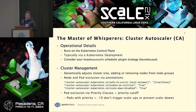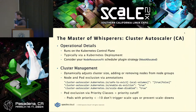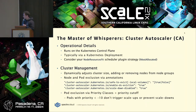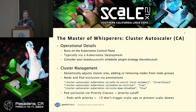At a high level, Cluster Autoscaler changes the sizes of the node groups that make up your cluster, whether adding or removing nodes. It's configurable through annotations. If you want to prevent a node from being taken offline completely, you can give it the scale-down-disabled annotation. Pods can be protected with the safe-to-evict annotation, and daemon sets with the enable-DS-eviction annotation.